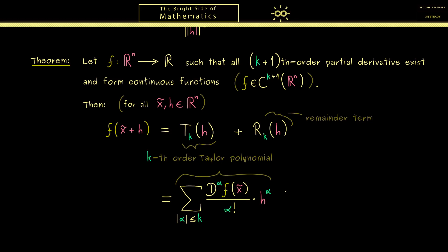Hence you see, the only thing missing now would be a nice formula for the remainder term. In fact, there is a very nice one which almost looks the same as the formula for the Taylor polynomial. The only difference here is that we now only look at the multi-indices with the highest order, so k+1. Moreover, we also don't evaluate the partial derivatives here at the expansion point x tilde, but at an intermediate point. And as often, we use for this point the Greek letter ξ.